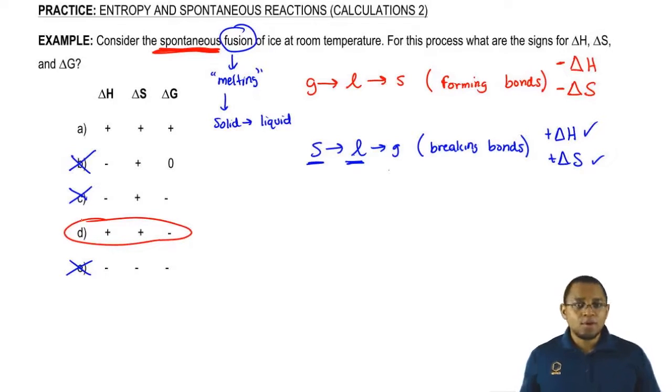So just remember, are you forming bonds or breaking bonds? This will help you figure out delta H or delta S. For delta G, you have to think in your head, does this naturally occur? Does it make sense for this to occur? If it does, then it's a natural process. And if it's a natural process, it's spontaneous. If it's spontaneous, delta G will be negative.